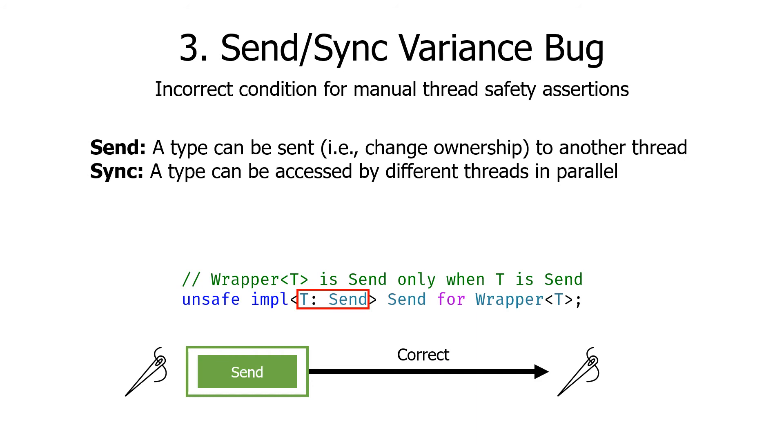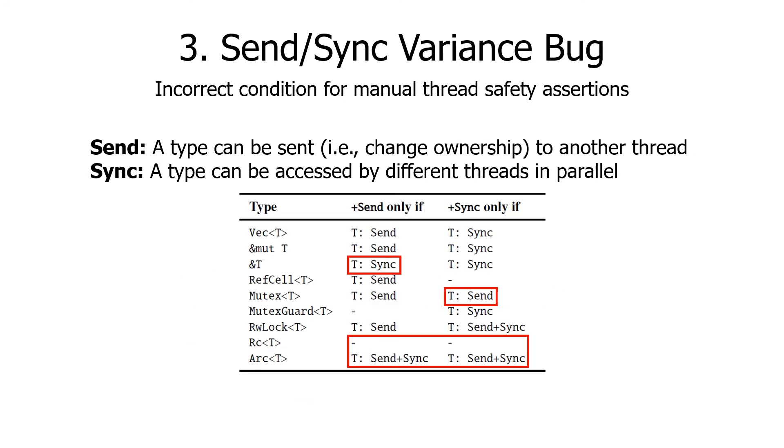To prevent such bugs, manual safety assertions must provide correct bounds for type parameters. This makes the wrapper type to be only Send when the inner type T is Send. The basic case is not too difficult, but it becomes very complicated when Send and Sync interact with each other. These are some of the rules for Send and Sync that are extracted from the Rust standard library. Some Send rules require T: Send bound, some Sync rules require T: Sync bound, some types are neither Send nor Sync regardless of the inner type, and some types require both bounds for Send and Sync.